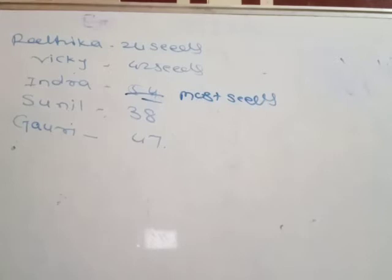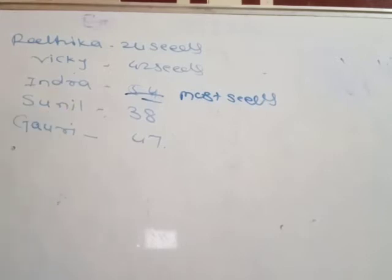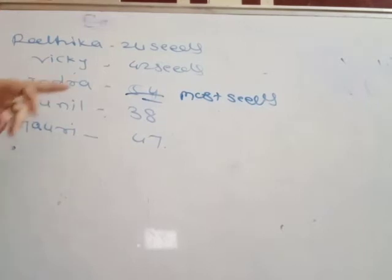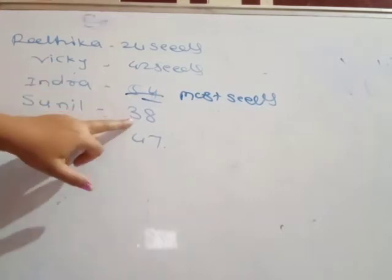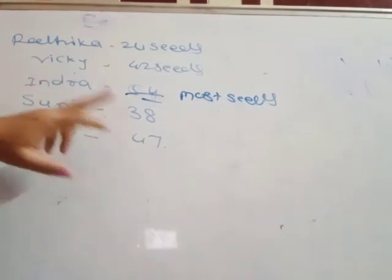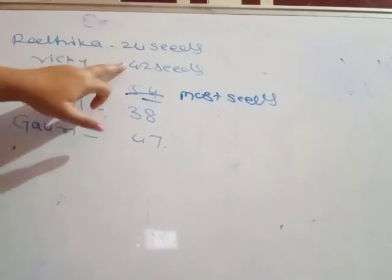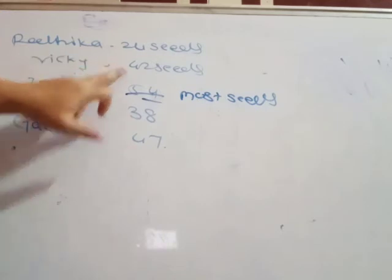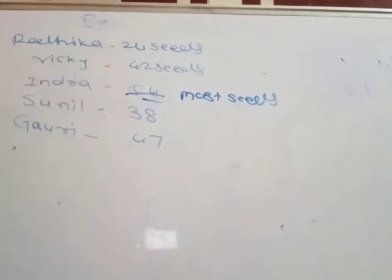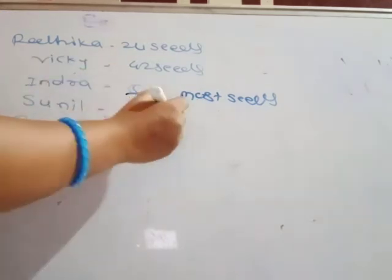Sunil will collect blank more seeds to be equal to Viki. See here, Sunil collected 38 seeds. Then, equal to 42 means how many more? Add here again.